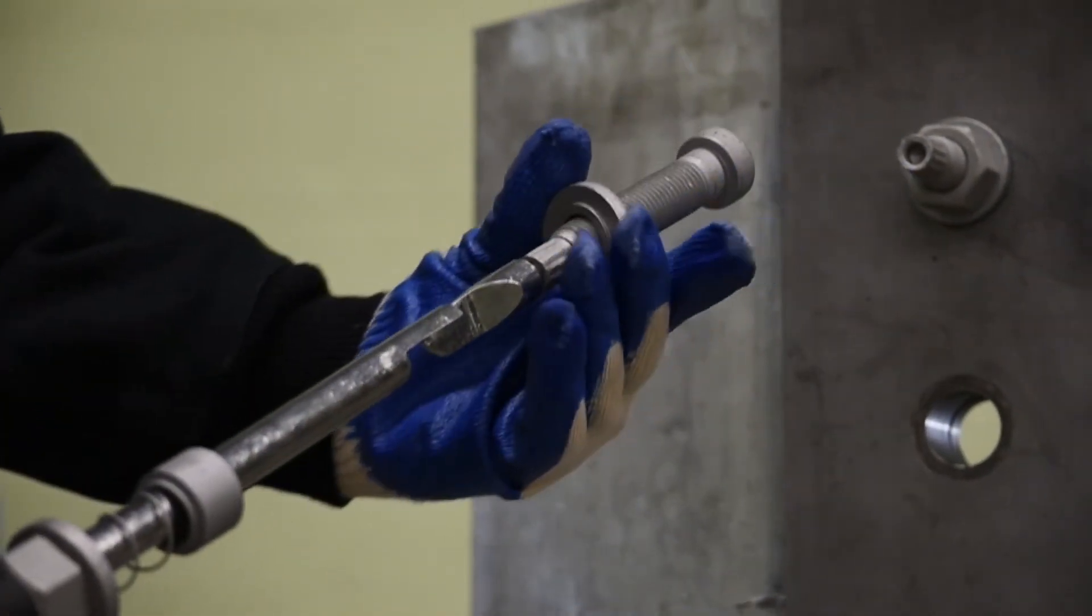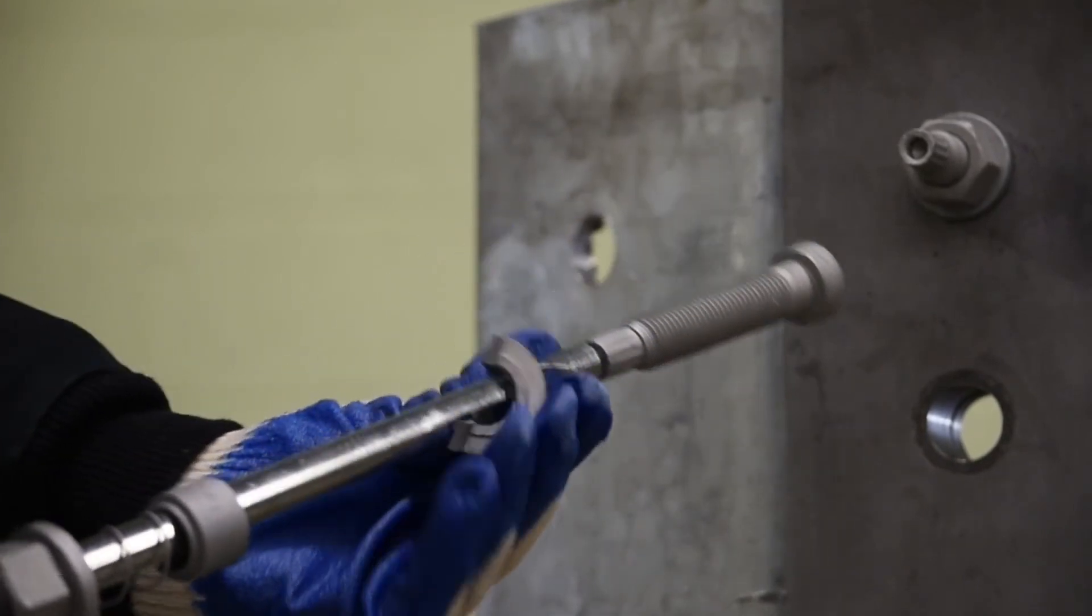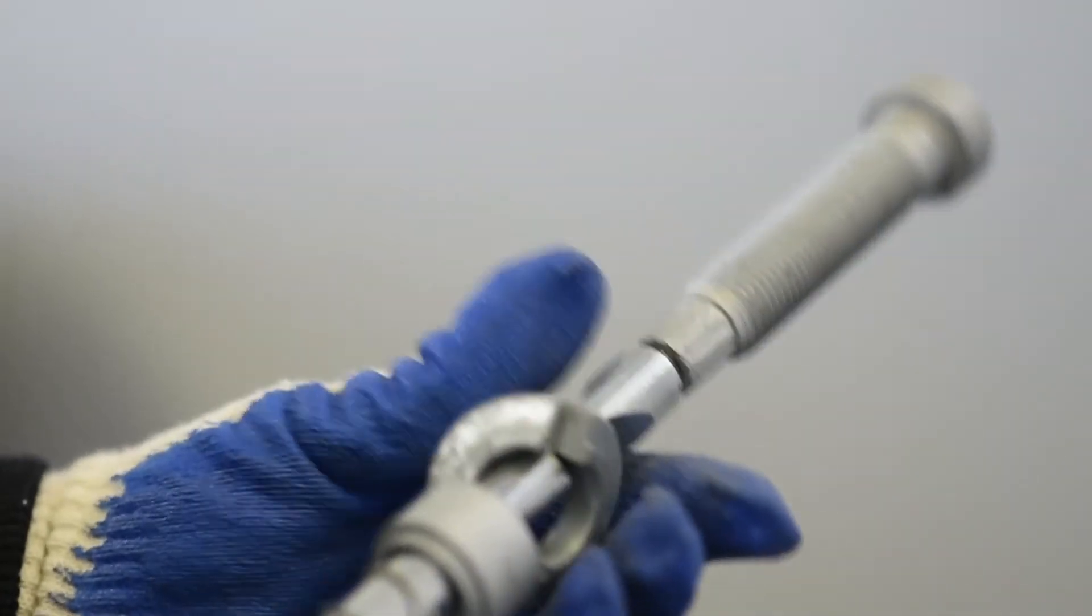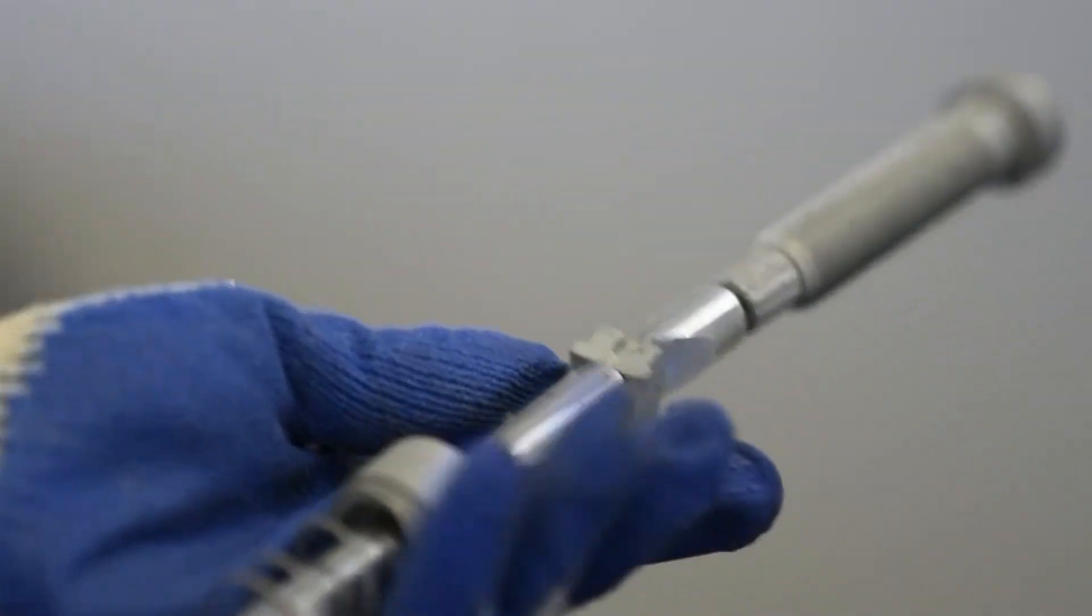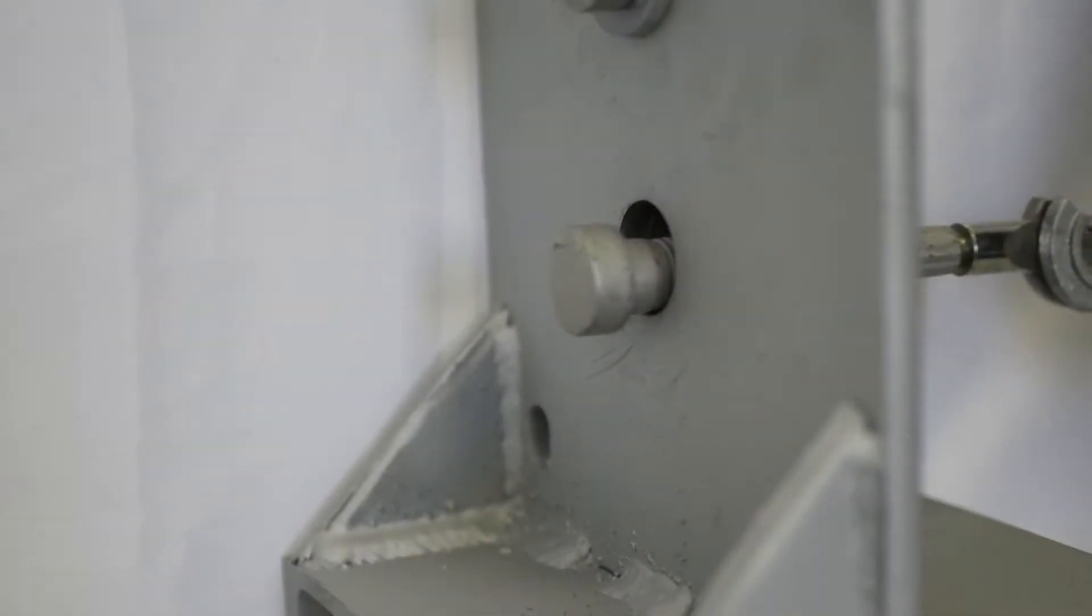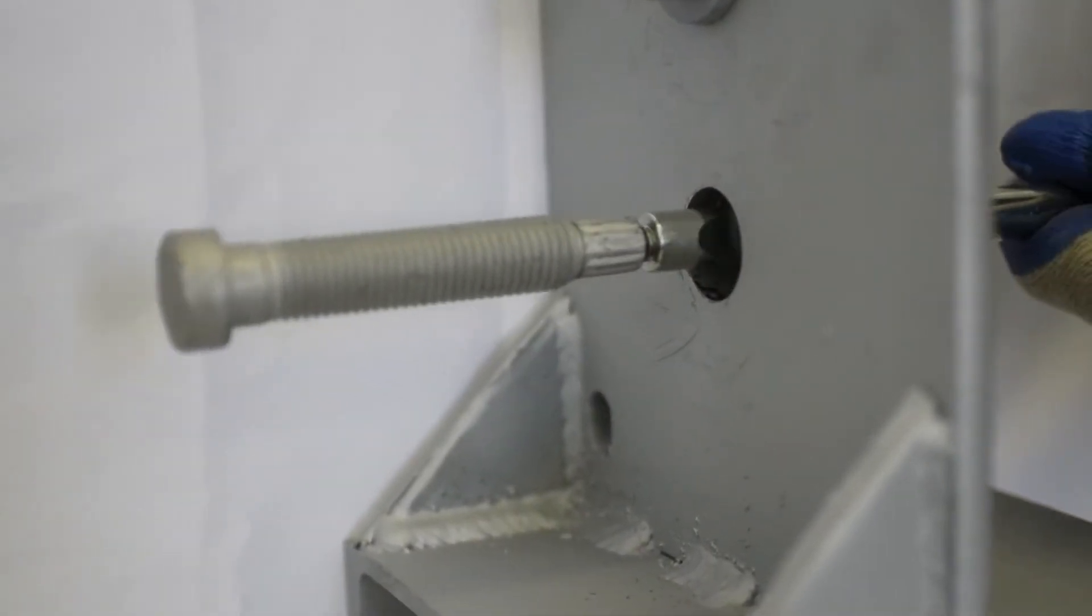Take the collapsible washer and move to the correct location on the tool and fold. Install the bolt into the hole followed by the collapsible washer.